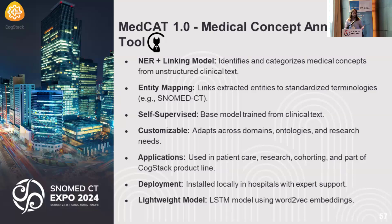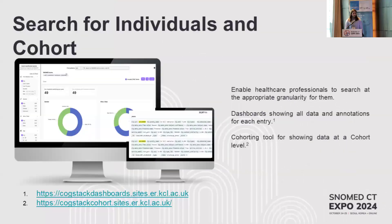It has multiple applications, so it's used in patient care, research, cohorting, and it's part of the CogStack line. We will go to NHS hospitals locally and deploy it and give them expert support. It's a relatively lightweight model — we've seen examples of generative transformers with 8 billion or 70 billion parameters, whereas this can have hundreds of thousands or just a few million parameters. Two big use cases are searching for individuals and cohorts, looking across SNOMED concepts or at a cohort of patients, which is useful for research and clinicians.